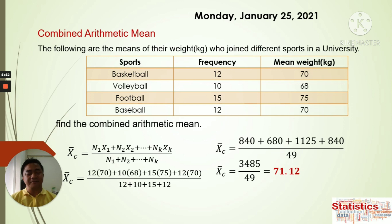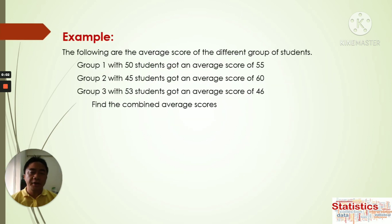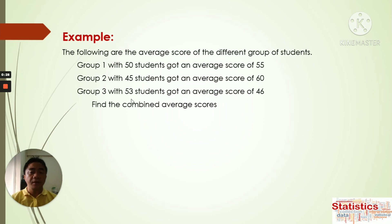Now we go to the third example. The following are the average scores of different groups of students. We have three groups: Group 1 had 50 students with an average score of 55; Group 2 had 45 students with an average score of 60; and Group 3 had 53 students with an average score of 46. We are going to find the combined arithmetic mean for all these groups.